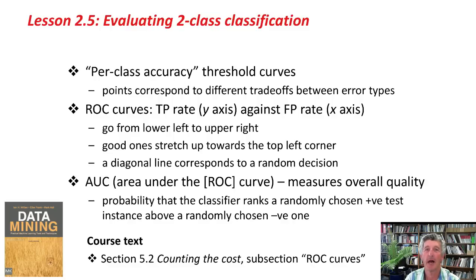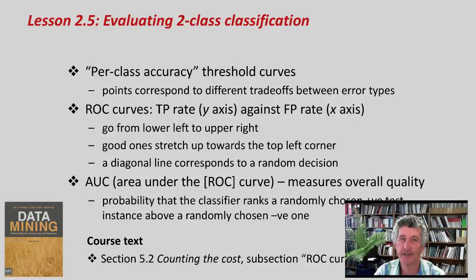We're looking at threshold curves that plot the accuracy of one class against the accuracy on the other class, and that depict the trade-off between these two things. ROC curves plot the true positive rate against the false positive rate. They go from the lower left to the upper right, and good ones stretch up towards the top left corner. In fact, a diagonal line corresponds to a random decision, so you shouldn't go below the diagonal line. The area under the curve is a measure of the overall quality of a classifier. It turns out that it's equal to the probability that the classifier ranks a randomly chosen positive test instance above a randomly chosen negative one. This has been a bit of a theoretical lesson, and it might be worth going to the textbook and reading the subsection on ROC curves in section 5.2. The activity associated with this lesson involves looking at actual ROC curves in an actual classification system. Good luck with that, and I'll see you in the next lesson. Bye for now!